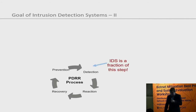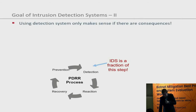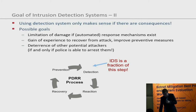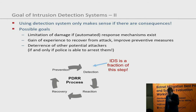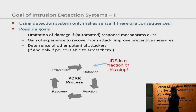What can we achieve by intrusion detection? We can detect attacks and attackers, and also detect system misuse by legitimate users — for example, downloading torrents. Detecting attacks only makes sense if there are consequences. Goals include limiting the damage, learning from attacks to improve preventive measures, learning about other potential attackers, and collecting data that could be handed over to police to potentially lead to arrests.